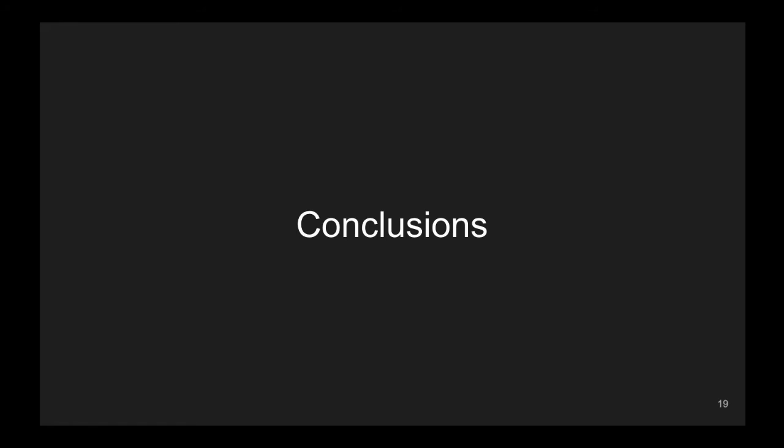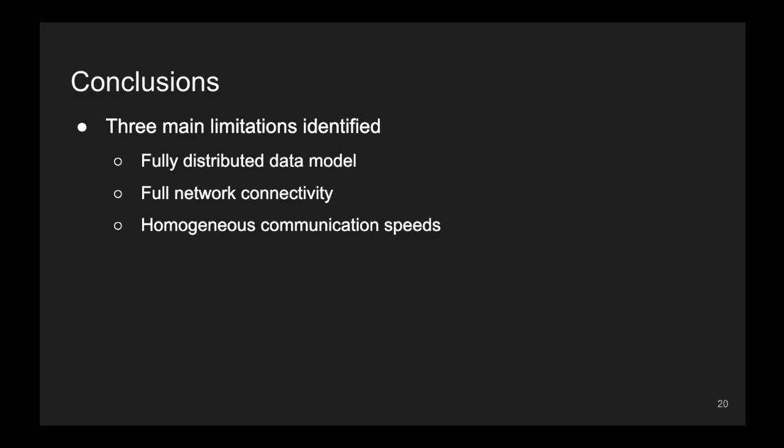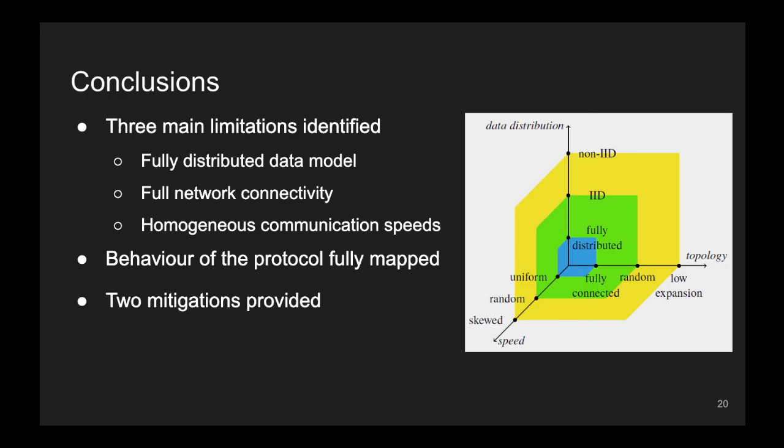So, to conclude, we have identified the three main limitations of the original gossip learning protocol, which are the fully distributed data model, the requirement of full network connectivity, and that of homogeneous communication speeds. We have mapped the behavior of the protocol when lifting these assumptions, and we have provided mitigations for two situations where the protocol shows bias, that is, when the speed distributions are skewed, and when the network topology shows a power law degree distribution.